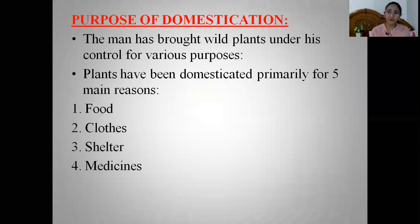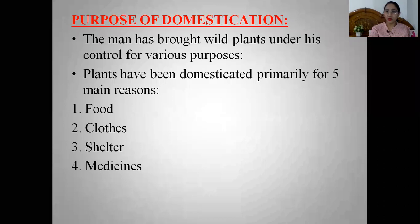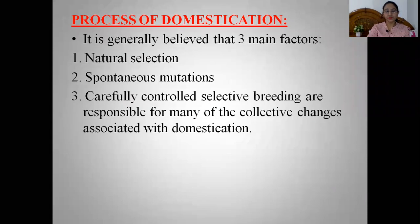Now we will see the purpose of domestication — why humans domesticated wild plants. Humans brought wild plants under control mainly for basic requirements: food, clothes, shelter, and medicine. These were the basic needs that led humans to start cultivating and domesticating wild weedy species.